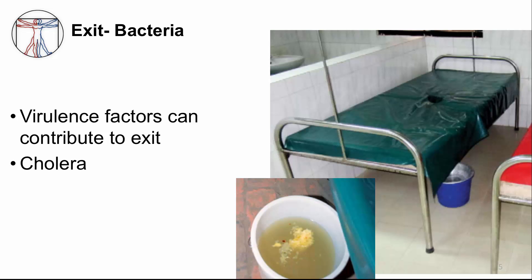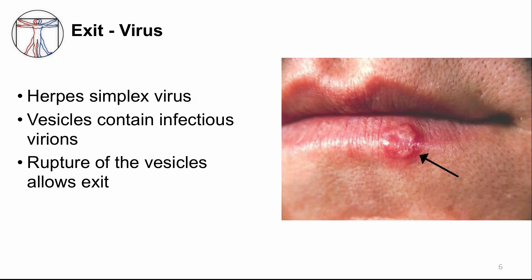Another way of exiting the host is through skin lesions. Some viruses can produce skin lesions to exit a host. Herpes simplex virus produces vesicular lesions like the one you see on the lip in this picture, and the vesicle contains infectious virions. When the vesicle ruptures, herpes simplex virus can exit the host.